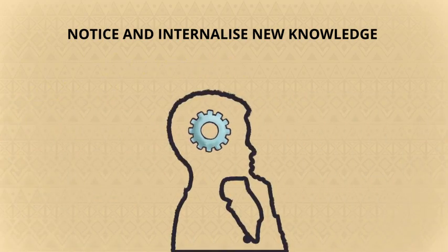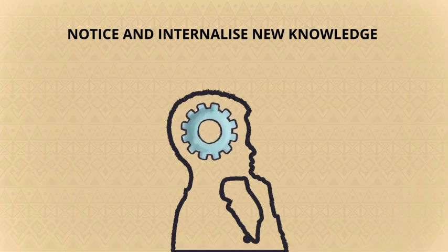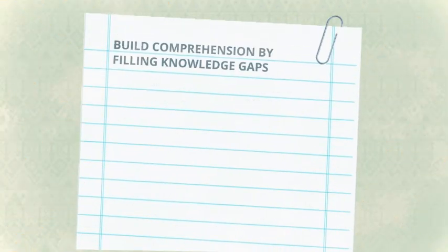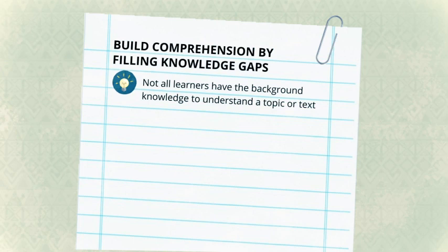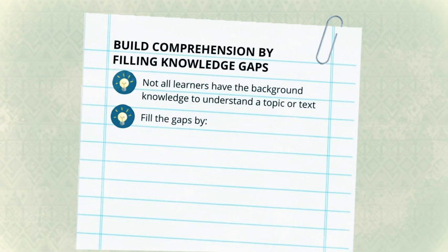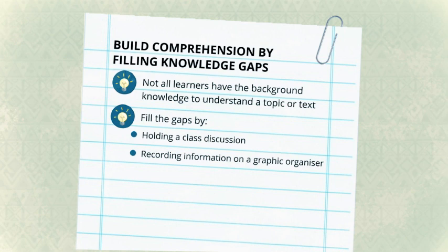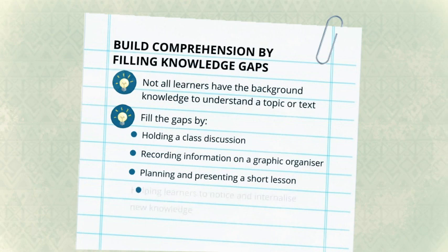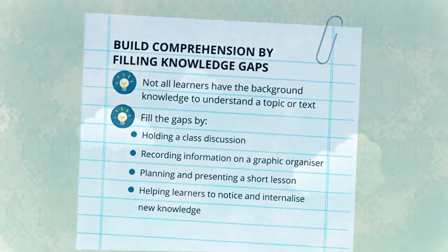Encourage learners by explaining that new knowledge soon becomes background knowledge. Not all learners have the required background knowledge to understand every topic or text. Without critical knowledge, some learners will never be able to understand a certain text. You can build learners' background knowledge or fill the gaps by holding a class discussion, recording information on a graphic organizer, planning and presenting a short lesson, and helping learners to notice and internalize new knowledge. Thank you.